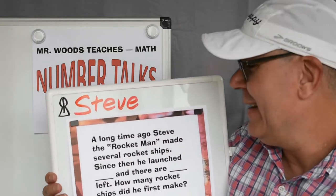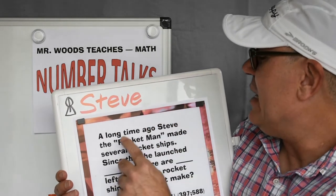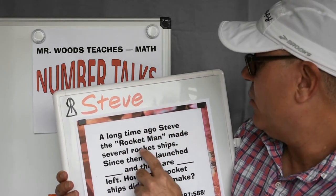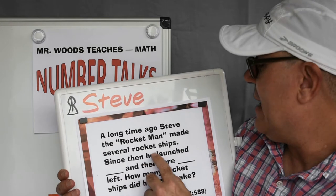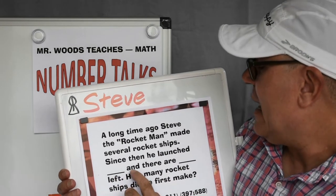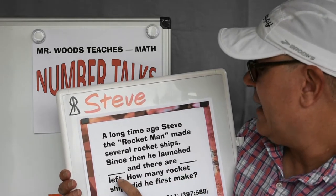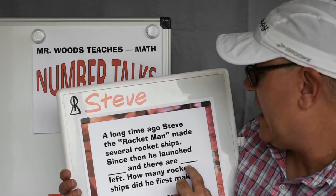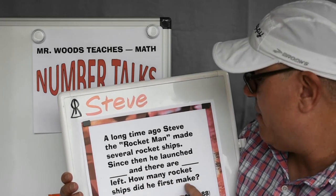Also known as Rocket Man. A long time ago, Steve, the Rocket Man, made several rocket ships. Since then, he launched seven, and there are six left. How many rocket ships did he first make?